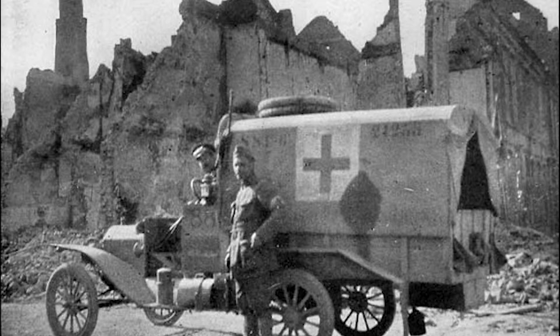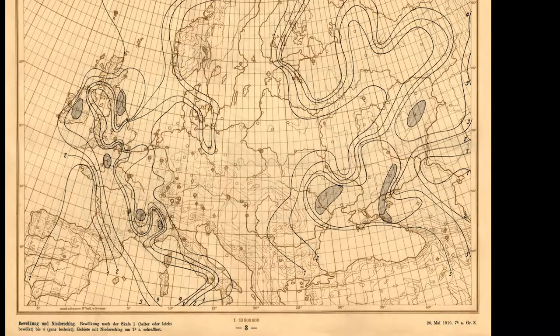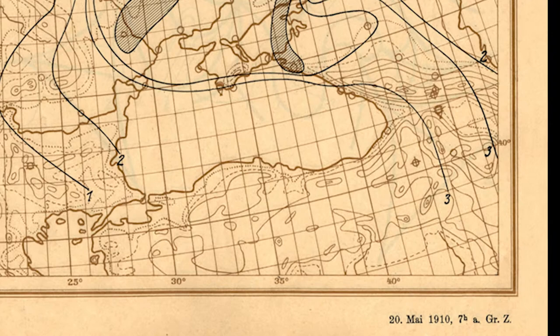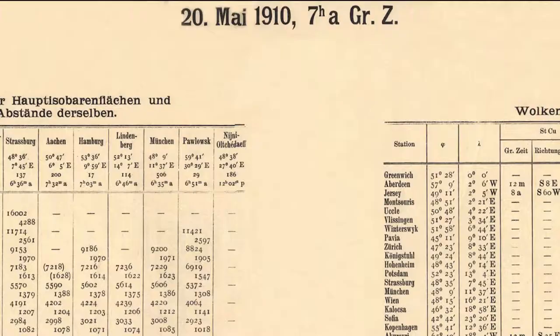During World War I, Richardson drove an ambulance on the battlefields of northern France, but he did not forget his forecasting dream. During breaks in battle, he tested his mathematical prediction system by retroactively trying to forecast the weather for the afternoon of May 20, 1910 — exactly 105 years ago today — a day chosen because extra upper air measurements had been made that morning, giving Richardson a better than usual handle on the initial state of the weather.